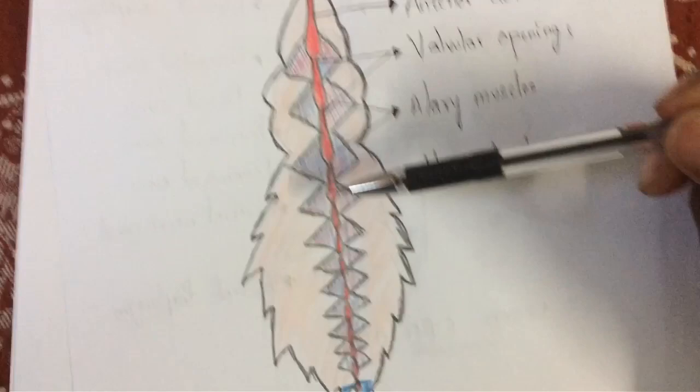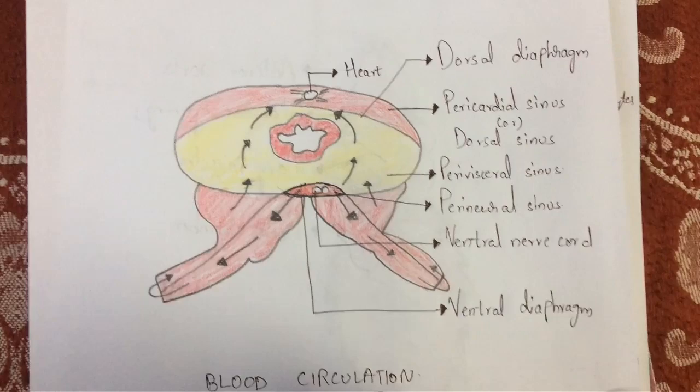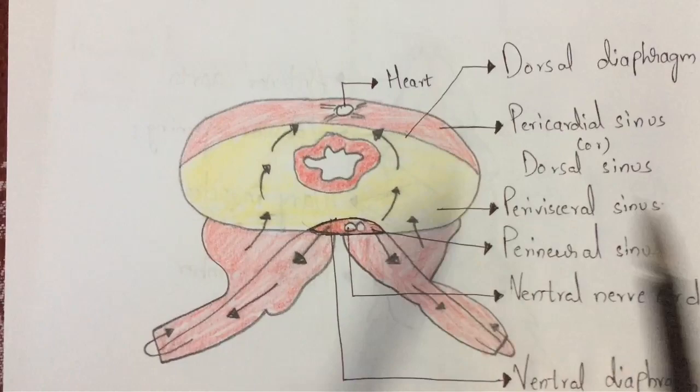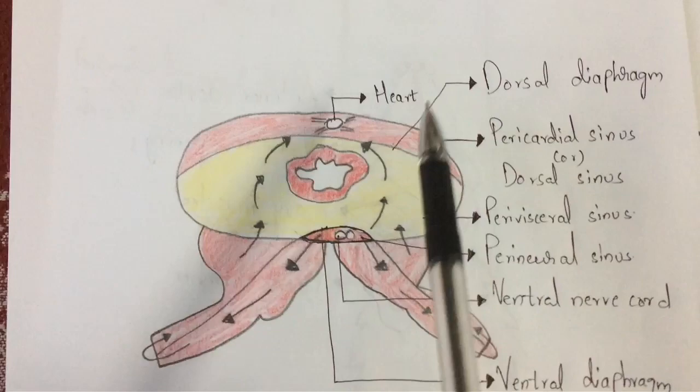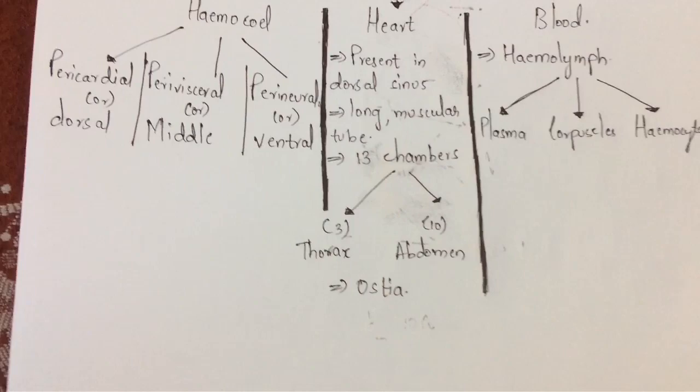The three thorax chambers are visible in the thorax region, and the remaining 10 are in the abdomen. Now, ostia: ostia is an organ that mainly receives blood from the pericardial sinus and pumps that blood into the heart. The blood present in the pericardial sinus enters the heart through the organ known as ostia — this is the main function of ostia.